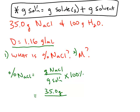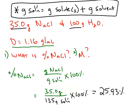So in this particular problem, we have 35 plus 100, 135 grams of the whole solution. Turn it into a percentage by multiplying by 100, and you get just under 26% by mass salt.